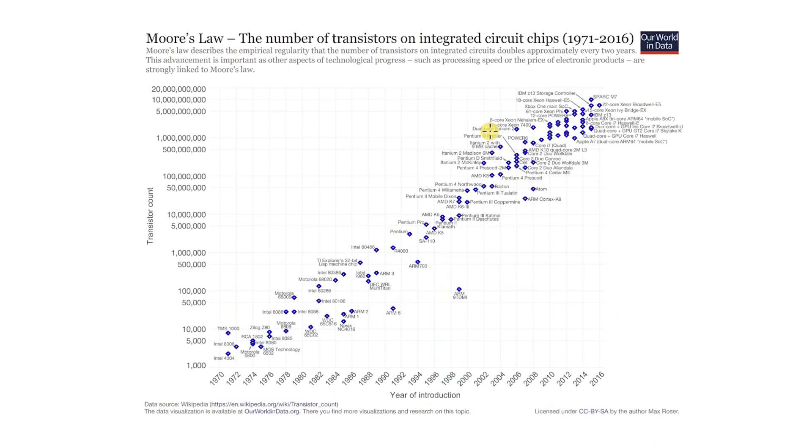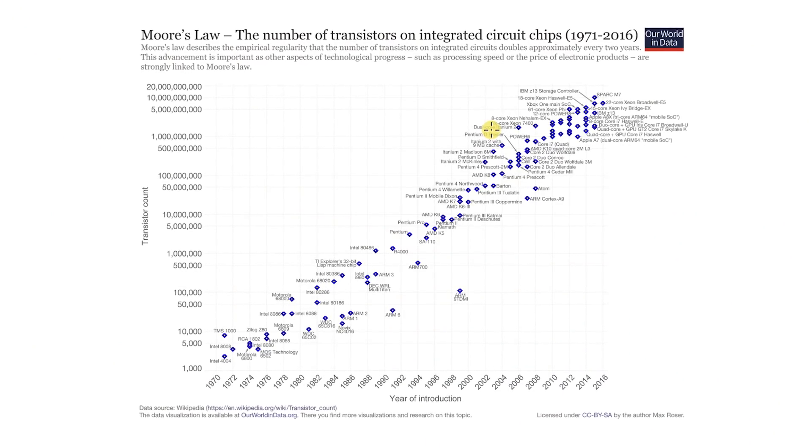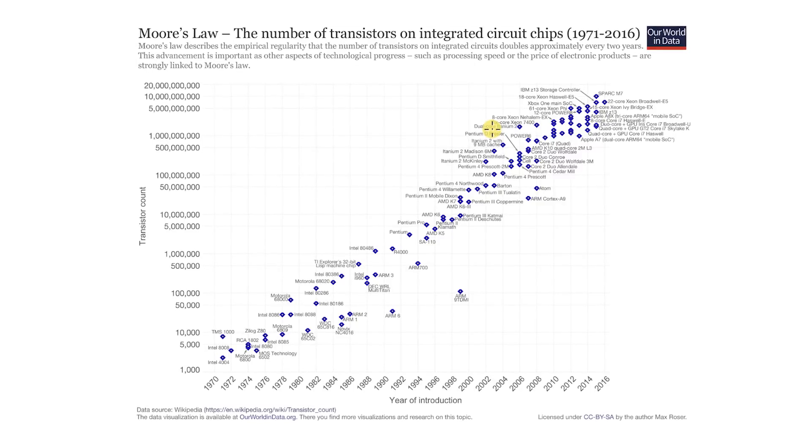They have to have two things for a revolution like this to happen. The first is people have to believe it's physically possible. And second, they have to believe it's a big payoff if they get it done. And in this case, both things were true. And we've got our modern information technology to show for it.